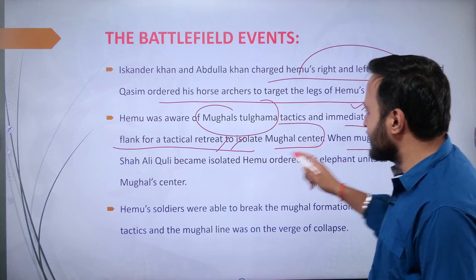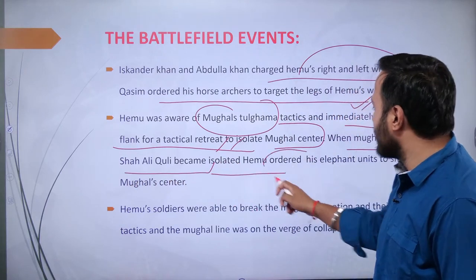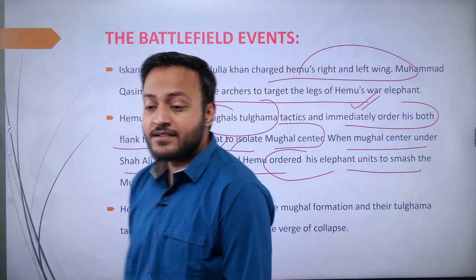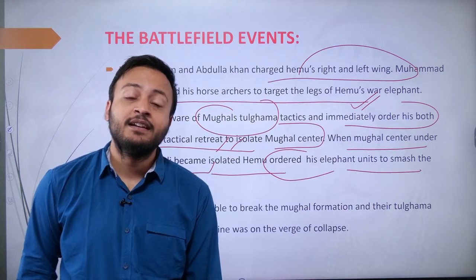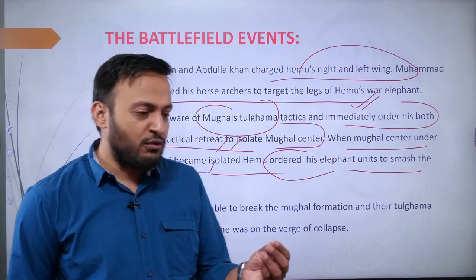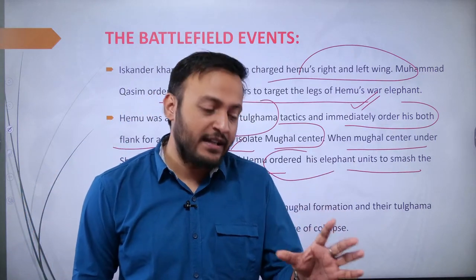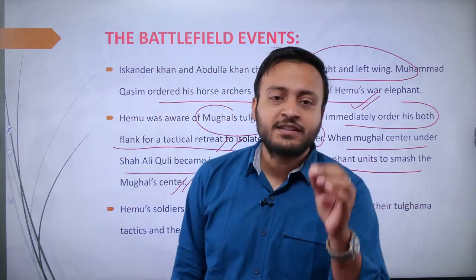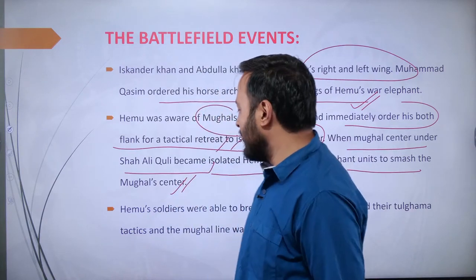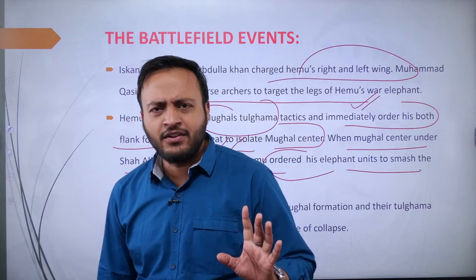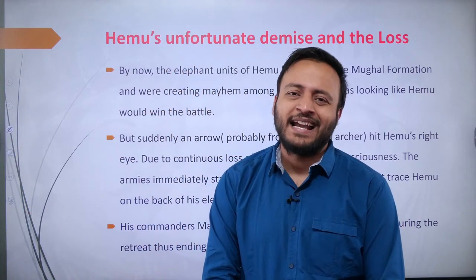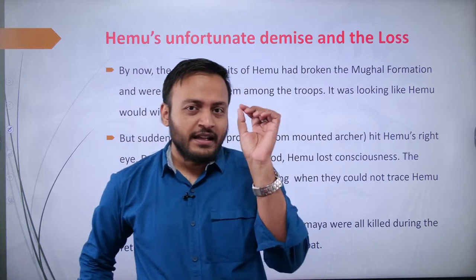When the Mughal center under Shah Ali Kuli became isolated, Hemu ordered his elephant units to smash the Mughal center. The Mughal right-center was targeted very tactically by Hemachandra Vikramaditya. Having studied the Tulugma system deeply, he was able to crash the Mughal center instantly. We could say that Hemu was near victory at this point.